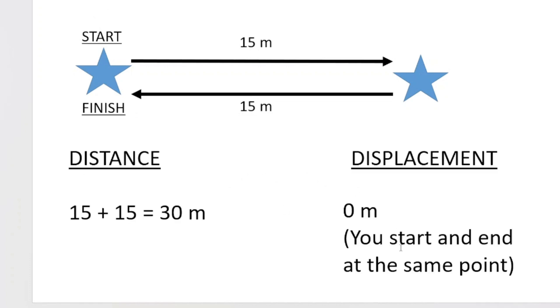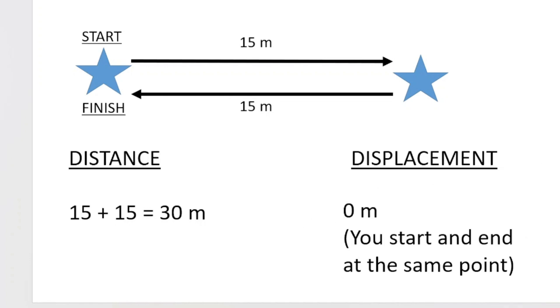Because the magnitude is zero, we don't need to give a direction. So it's just zero meters — there's no direction. According to displacement, you didn't move at all.